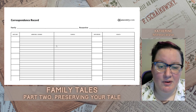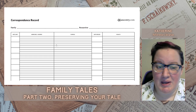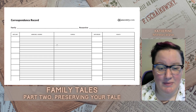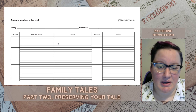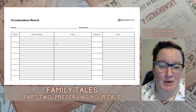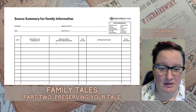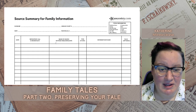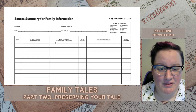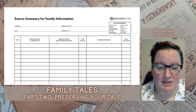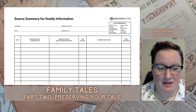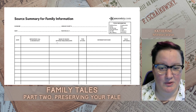A correspondence record is a way to track everybody who you have written to about your research, whether it's somebody in your family or somebody who has done research in your family line before. A source summary is a quick reference of the sources that you have used — it's the most basic details from your research extracts, but all in one place for a quick way to look it up.